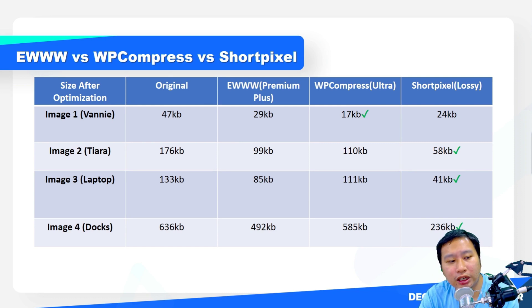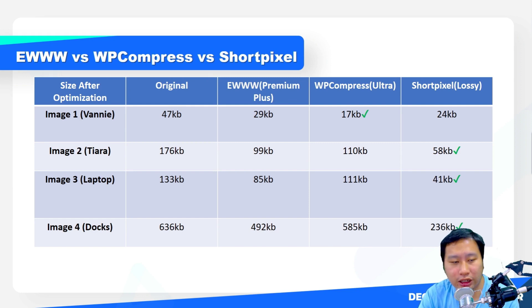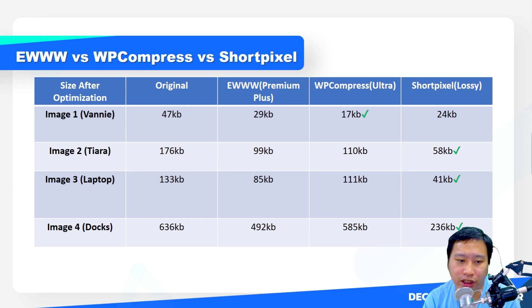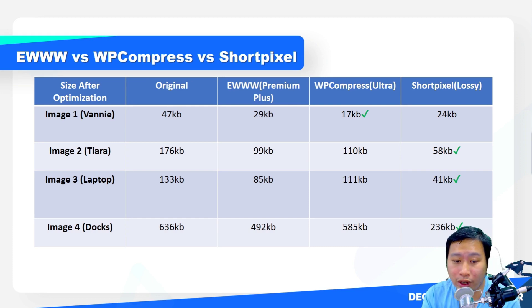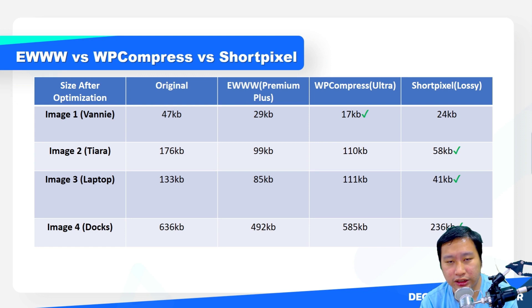The third image is a laptop at 133 KB. Ewww brings it down to 85 KB, WP Compress brings it to 111 KB, and Short Pixel brings it down to 41 KB.